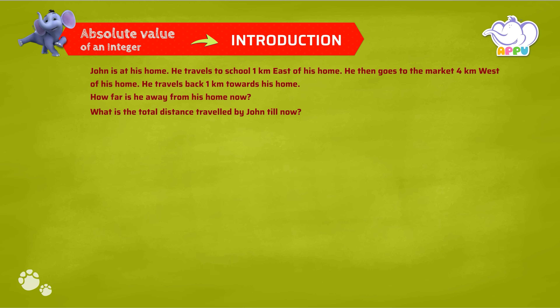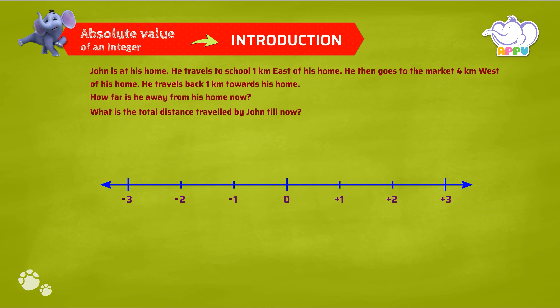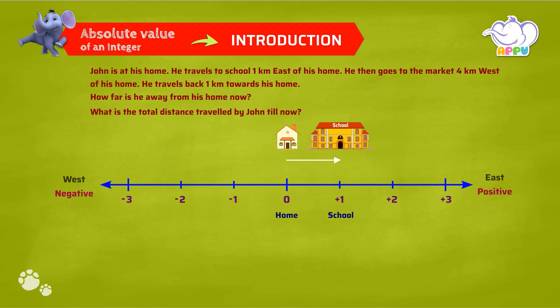Let's mark these on a number line. We consider traveling to the east as positive and traveling to the west as negative. John starts from his home — let's mark home at 0. He travels 1 km east to school, that is positive 1 or plus 1.